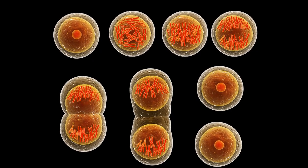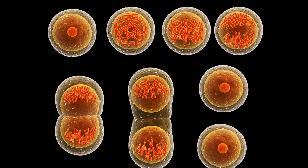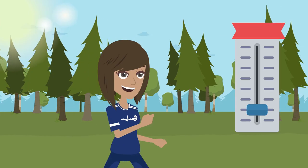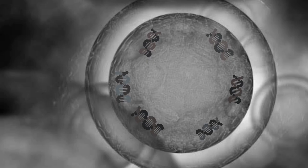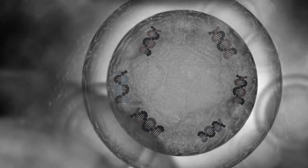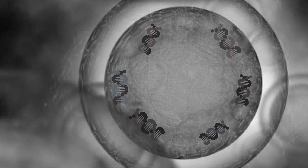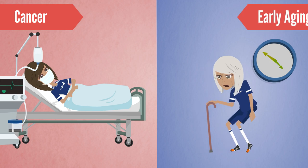Which genes are turned on or off guides the development and normal function of a cell which affects our health. Abnormal DNA organization is associated with human diseases such as cancer and early aging.